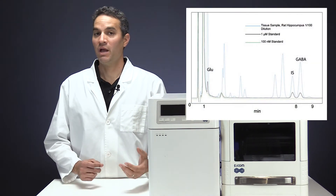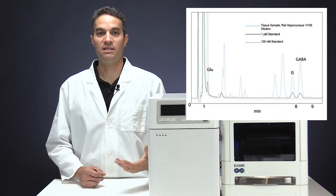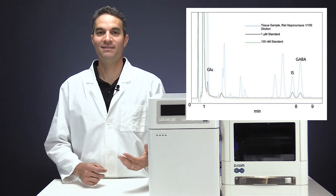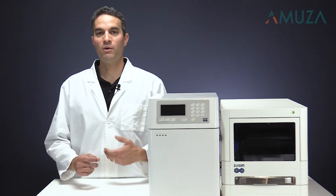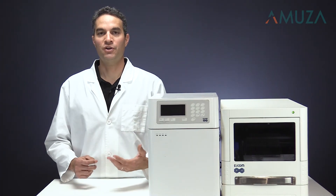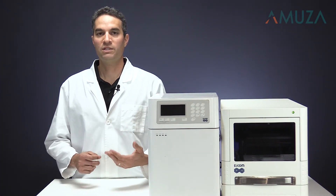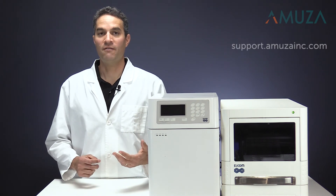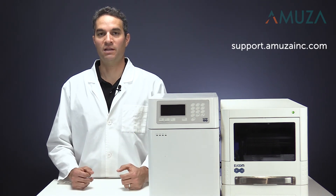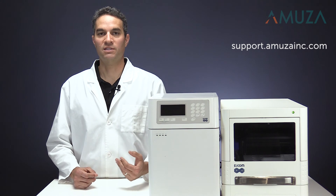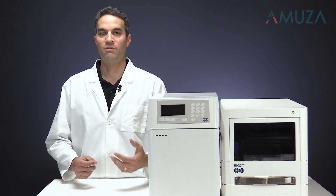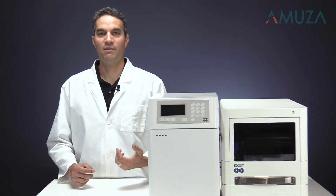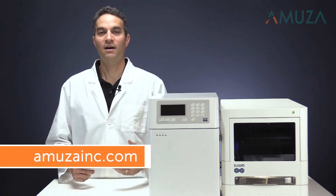Here's a chromatogram showing the simultaneous detection of glutamate and GABA. At Amusa, we always have the end user in mind. That's why when you purchase one of our machines, you also have access to our self-help support center, as well as our support specialists that can assist you with troubleshooting or replacement of parts as needed. For more information on glutamate and GABA analysis, contact us today.